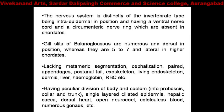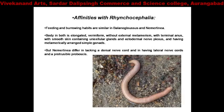These characters show affinities (relationship) of Hemichordata with Chordata. Additional characters include: having a peculiar division of body into proboscis, collar, and trunk; single-layered ciliated epidermis; hepatic caeca; dorsal heart; open neurocoel; colorless blood; numerous gonads; etc. These characters are also present in Hemichordata.